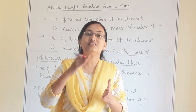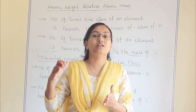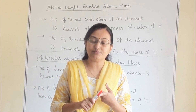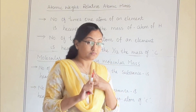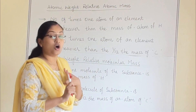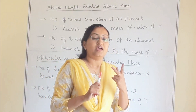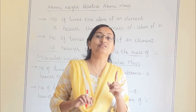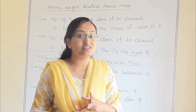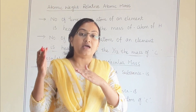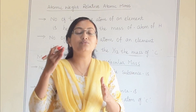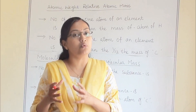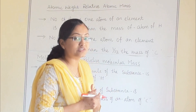So we will always compare them with one reference. And as a reference, what have we selected? A hydrogen atom and a carbon atom. The mass of hydrogen is 1 — the atomic mass of hydrogen is 1 — and the atomic mass of carbon is 12. So accordingly, we will calculate the relative mass of any other atom or any other molecule.